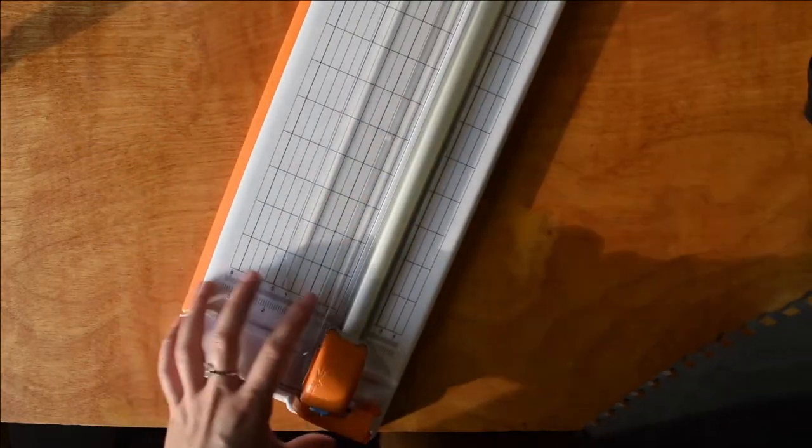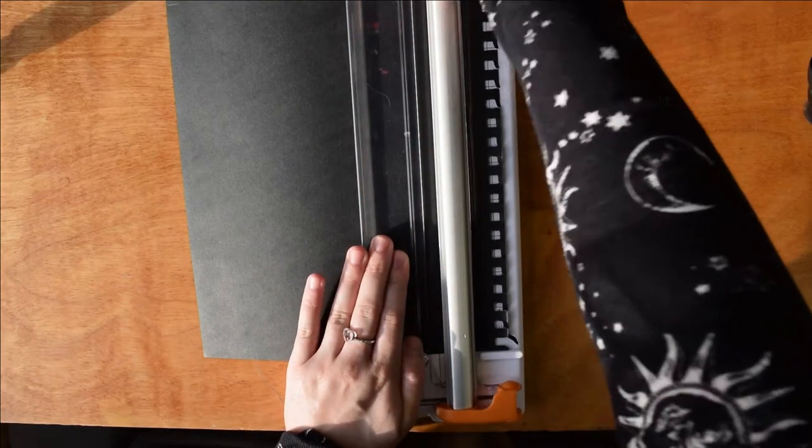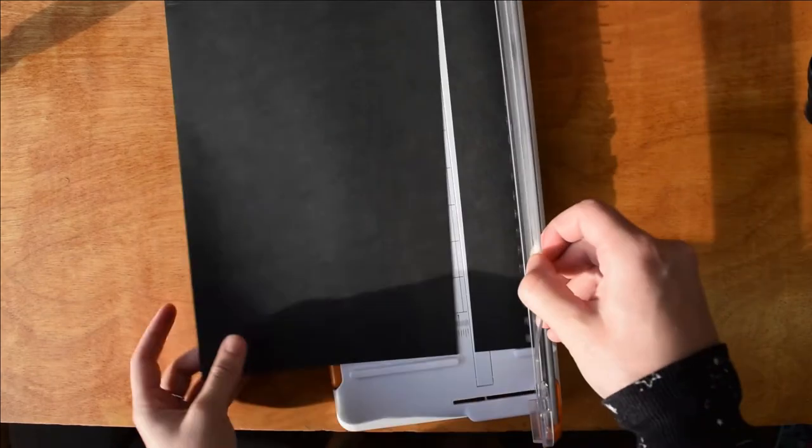After that, I just had to cut all my paper down to size. It needed to be seven inches by 10 inches so that when I folded it, it would be five by seven, which were the guidelines for the dimensions.